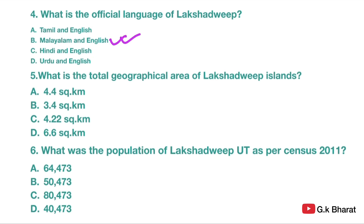Next. What is the total geographical area of Lakshadweep islands? Option A: 4.4 square km. Option B: 3.4 square km. Option C: 4.22 square km. Option D: 6.6 square km. Your correct answer is option C — 4.22 square km.